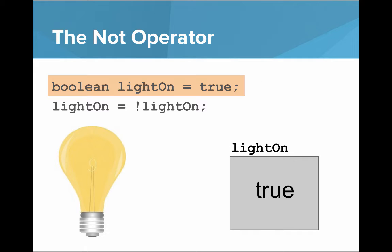Let's look at an example with the NOT operator. Say I declare a Boolean called lightOn and set it equal to true. You can see that our box holding that value has the value true.